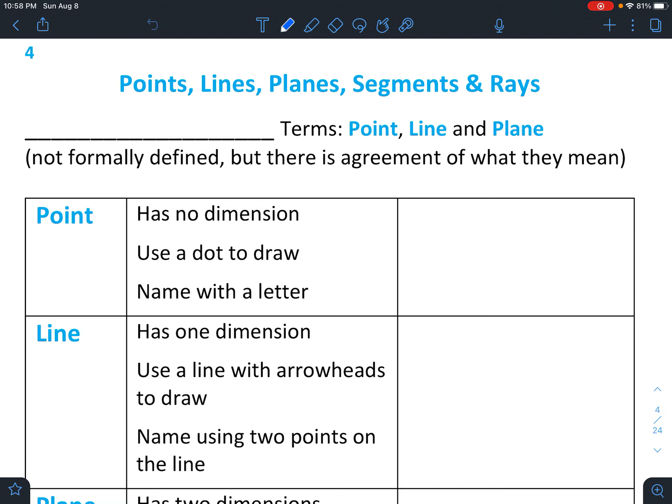There's actually some terms that are called undefined terms, which seems really strange to be defining undefined terms. We'll talk about what that means. Basically the terms point, line, and plane are not formally defined, but there's an agreement of what they mean. So we don't have a technical definition, but we all agree what a point is, a line is, and a plane. And we're going to talk about that right now.